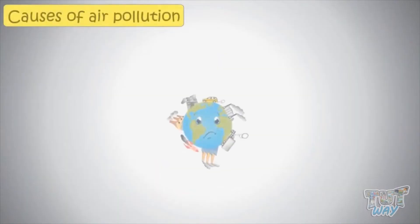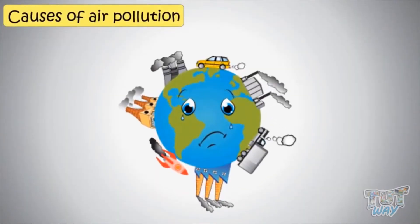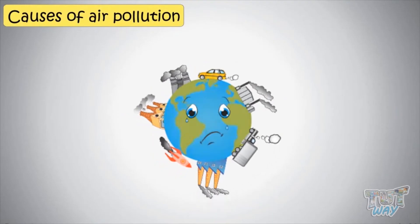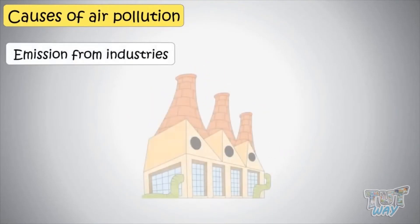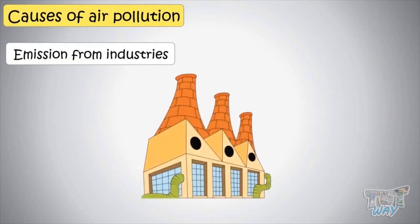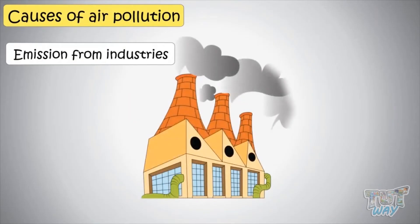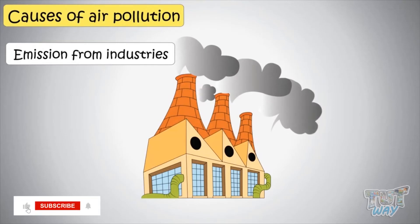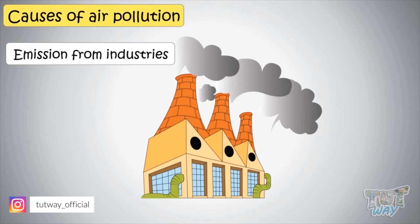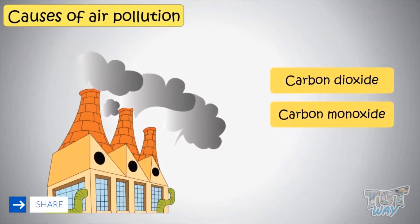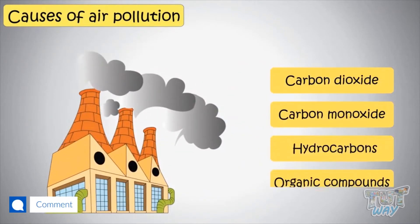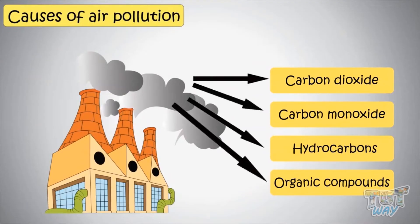Now let's learn what are the major causes of air pollution. Emissions from industries and manufacturing activities: almost all types of industries emit a lot of smoke that is released into the atmosphere and pollutes the air. Their smoke has high levels of harmful gases and particles like carbon dioxide, carbon monoxide, hydrocarbons, and organic compounds that are very harmful.